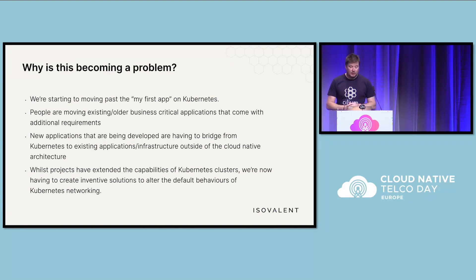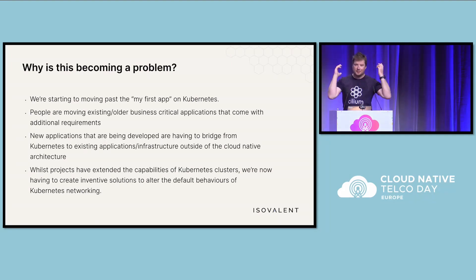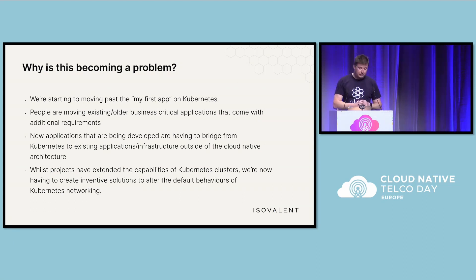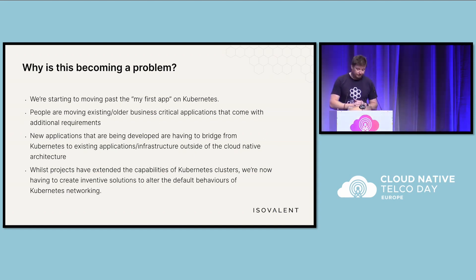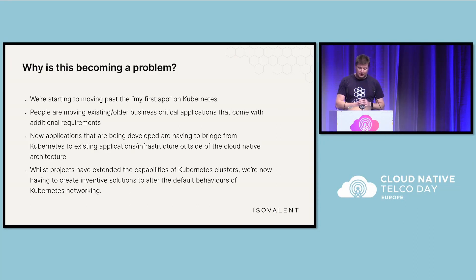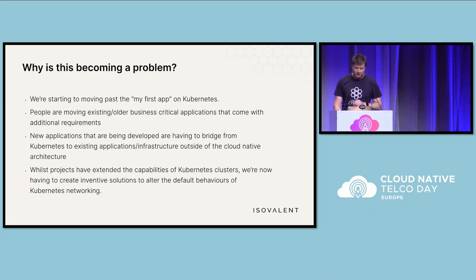Why is this actually becoming a problem? As I mentioned, we're moving past your first application that is kind of simple, like a web server. People want to move existing applications that have different requirements. People are moving those critical applications on there and they want to interact with existing and physical infrastructure. So whilst we've extended the capabilities of Kubernetes clusters, we're now having to create new and innovative solutions in order to alter those default behaviors. I'm going to step through a couple of quick scenarios and the sorts of things that we're having to do in order to get traffic in and out of Kubernetes clusters.